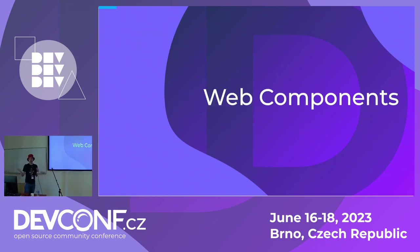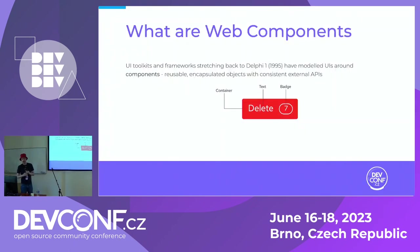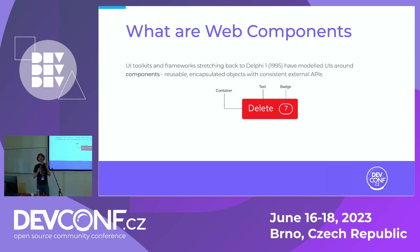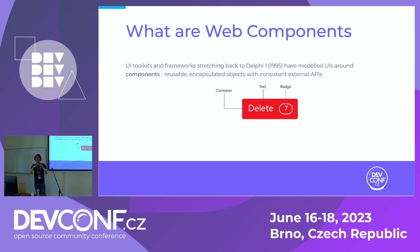So what is a web component? If you've never heard of web components before — already stretching back to the 90s, UI toolkits like Delphi had modeled their components, their UI systems based on components. The idea of a component is like a button. A button has text, maybe has an icon, has a color, maybe a state. The idea of components is where the state, style, design, functionality, and behavior are all encapsulated inside the component.